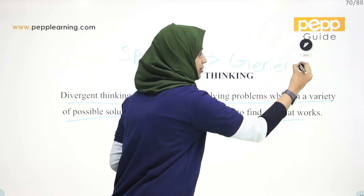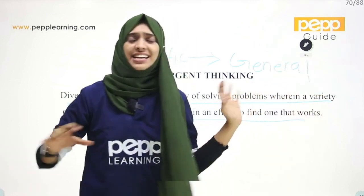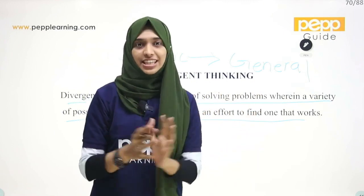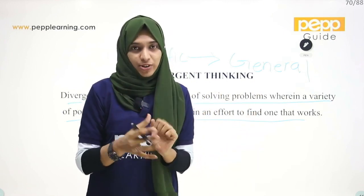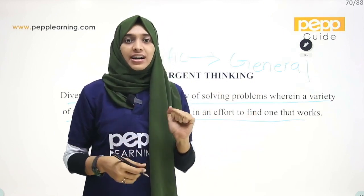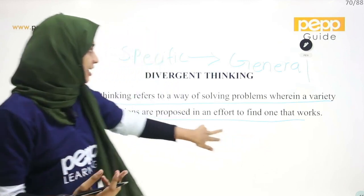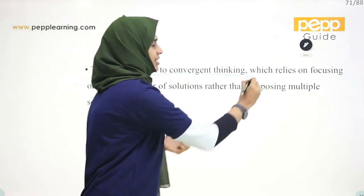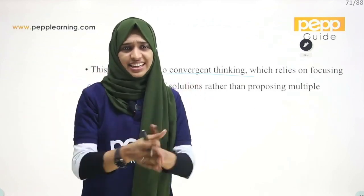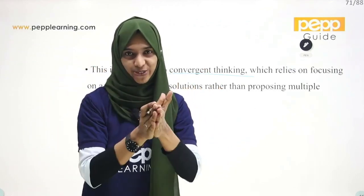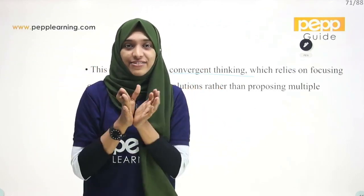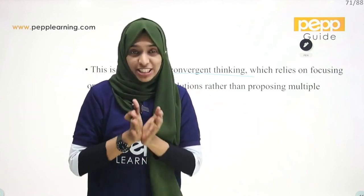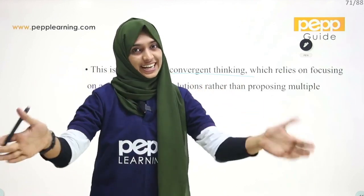Divergent Thinking is the specific idea of a problem moving to a general idea. What is diversity in thinking? We must think. That is something that is opposite — you have to study it as Convergent Thinking. On the other hand, you have to study it as divergent, from the specific to the general.